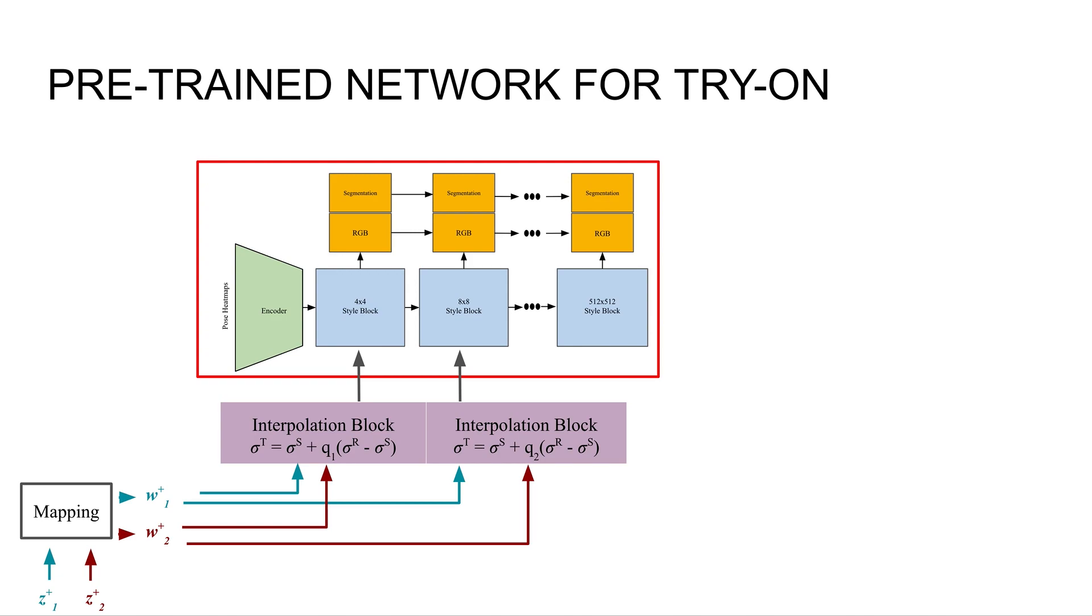A key part of our optimization are having these interpolation blocks at each resolution. We interpolate between the style representation of the person and the style representation of the garment image. And when done correctly, this means that we can transfer the representation of the garment that we're interested in to the person representation.